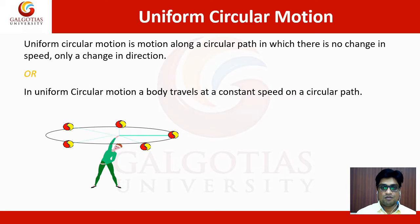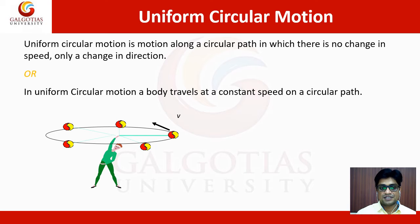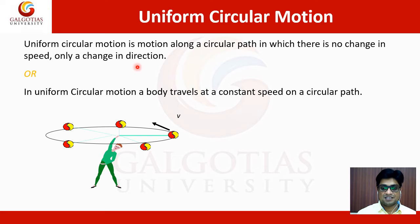Let's discuss uniform circular motion. It is clear from its name that any motion with a constant speed along a circular path is known as uniform circular motion. Since velocity is a vector quantity, it has both direction and magnitude. In uniform circular motion, the magnitude is not changing — only the direction is changing.